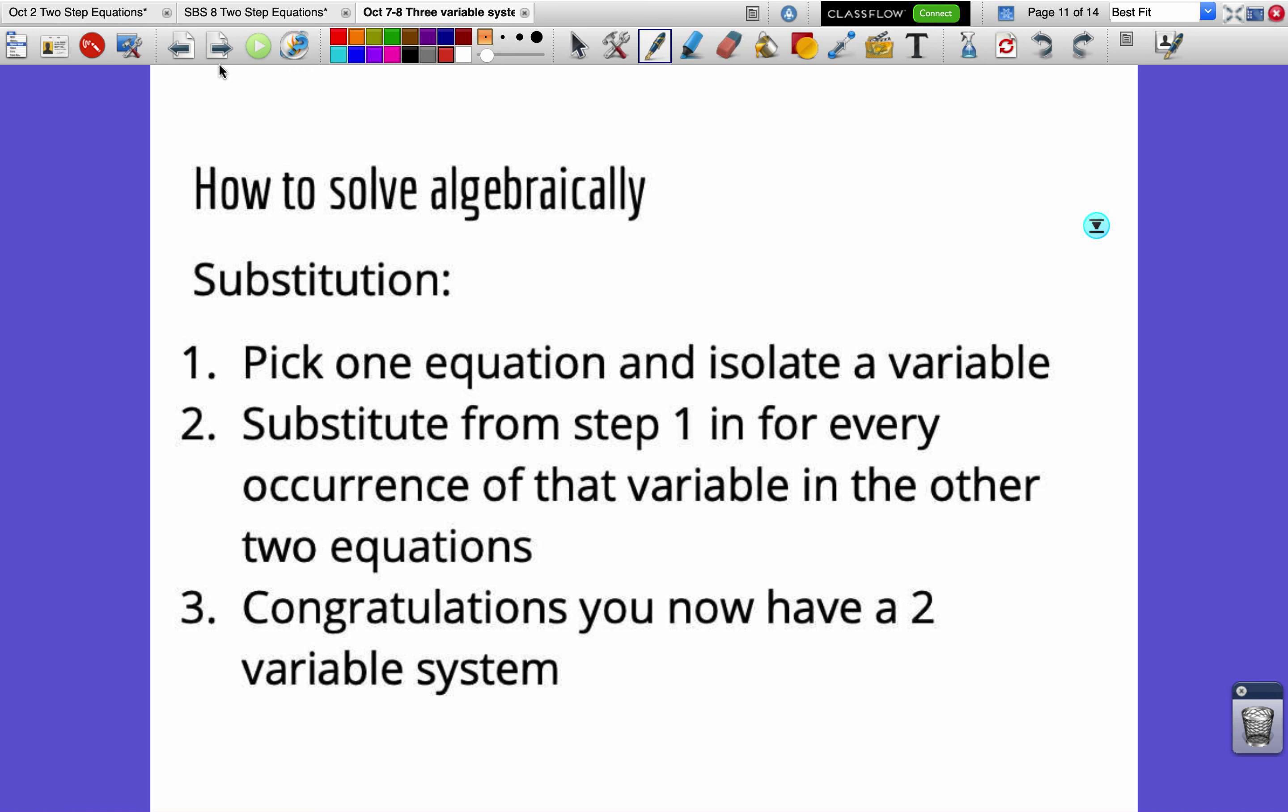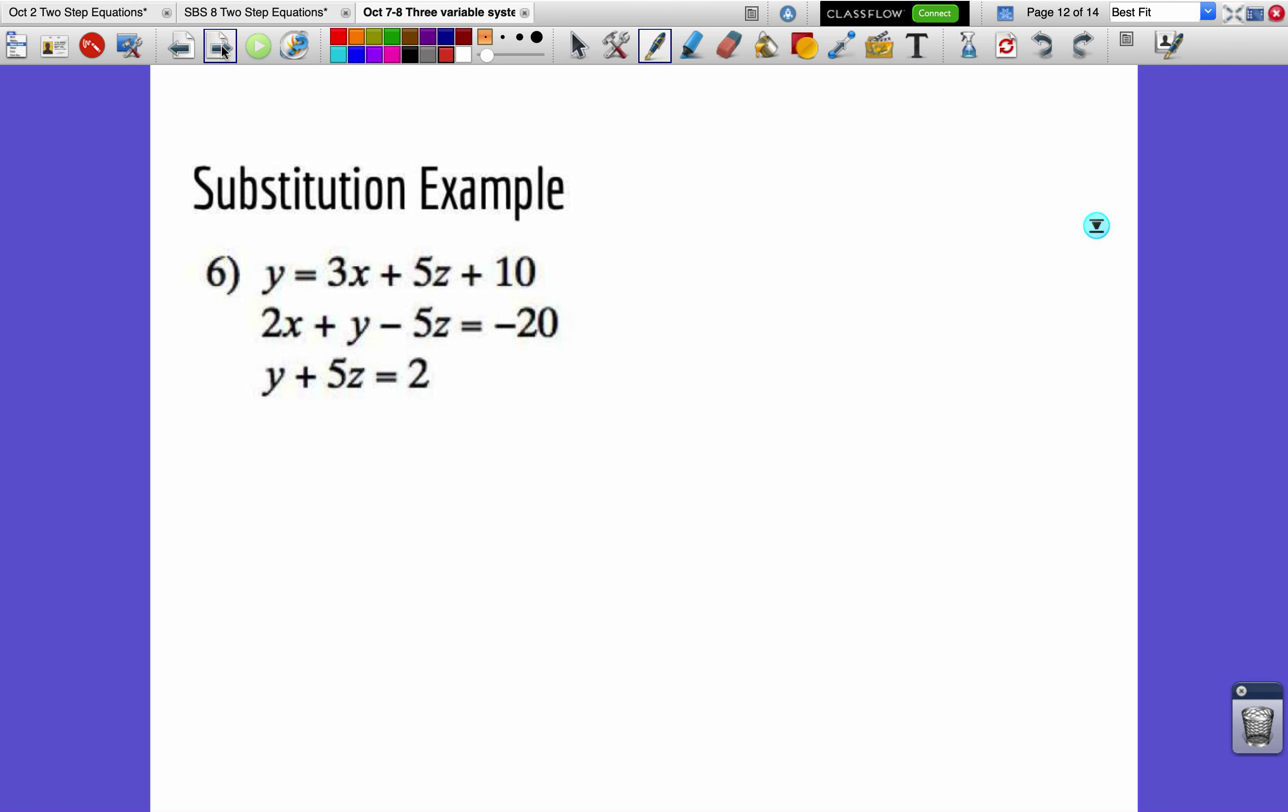And now it's time to talk about substitution. So the concept here is pick one equation and isolate a variable. Substitute from step 1 in for every occurrence of that variable in the other two equations. And now you've got a two-variable system. So here's one we'll practice with. Go ahead and copy it down.